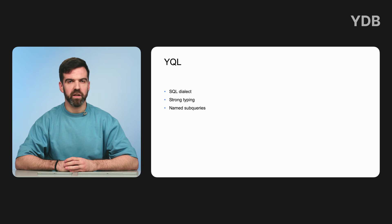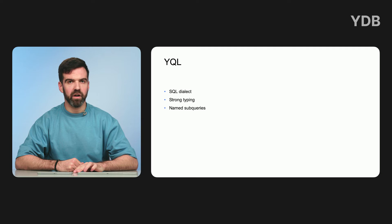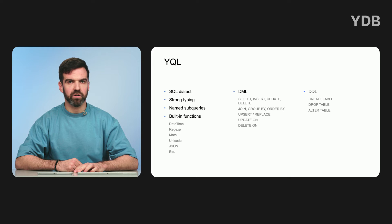YQL, the YDB Query Language, is a universal declarative query language for YDB — a dialect of SQL. YQL has been natively designed for large distributed databases. It features strong typing and has many embedded functions for date, time, math, JSON, etc. Its DML and DDL constructions are very close to SQL.